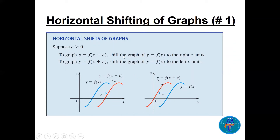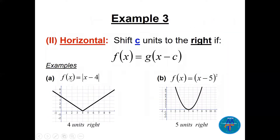Horizontal shifting: shifting the graph right or left means the value of c is now related to x. If we have f(x − c) with c positive, the graph shifts to the right c units. If we have f(x + c) with c positive, the graph shifts to the left c units. For example, f(x) = |x − 4|: the four is inside the function, so x − 4 shifts the whole graph to the right.